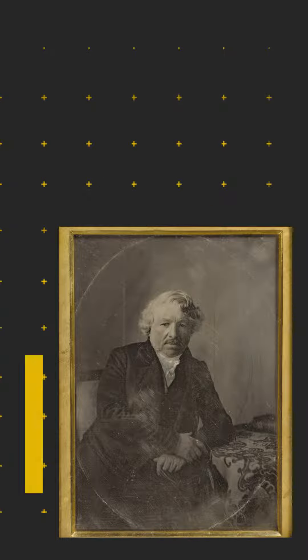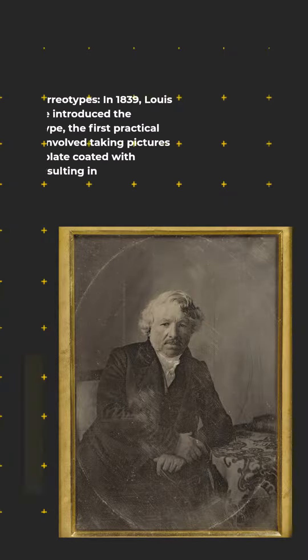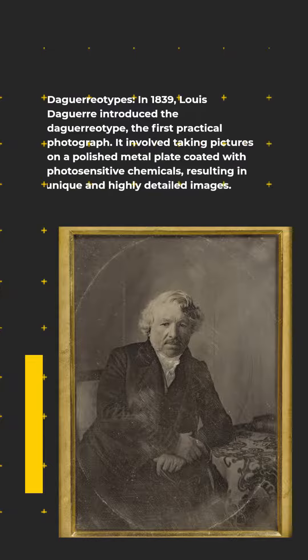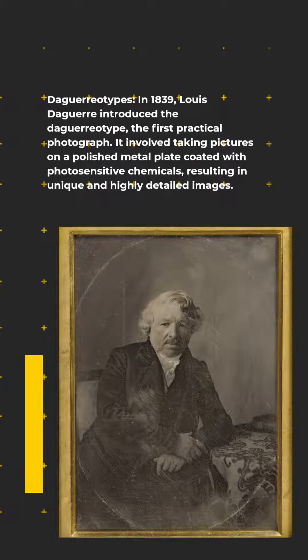Daguerreotypes: in 1839, Louis Daguerre introduced the daguerreotype, the first practical photograph. It involved taking pictures on a polished metal plate coated with photosensitive chemicals, resulting in unique and highly detailed images.